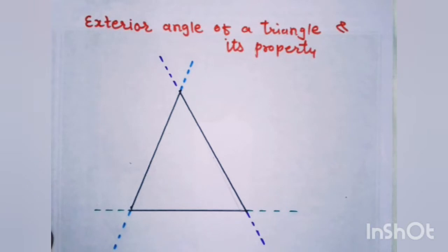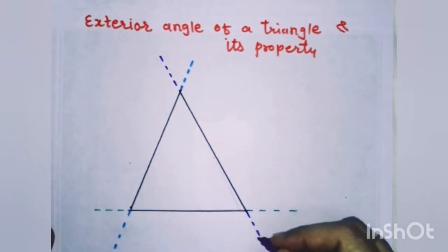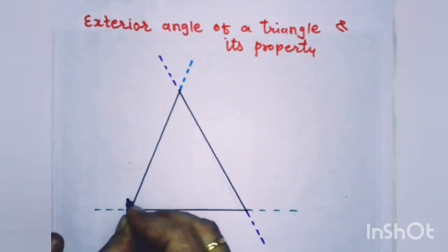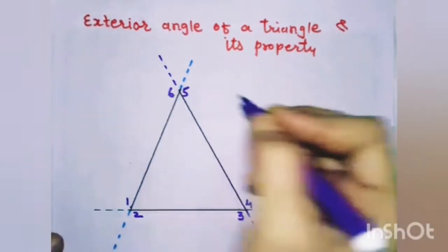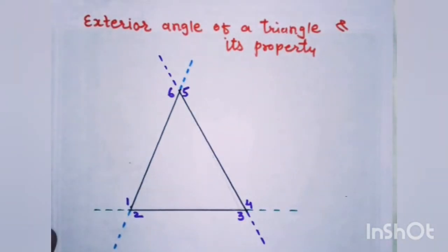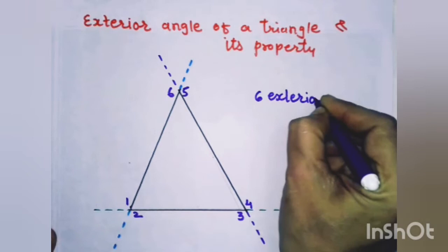Now I will explain the next property, that is the exterior angle of a triangle. What does this property say? An exterior angle of a triangle is an angle formed by one side of the triangle and the extension of an adjacent side. Here you can see the extensions marked by different colors. Angles 1, 2, 3, 4, 5, and 6 are the 6 exterior angles. So every triangle has 6 exterior angles.